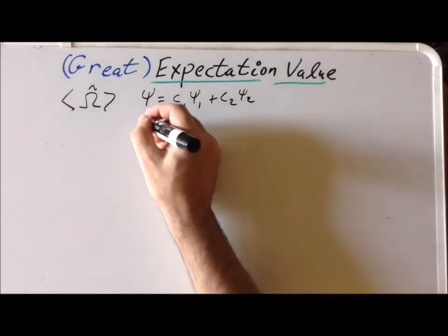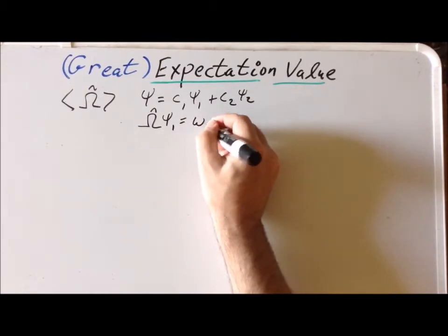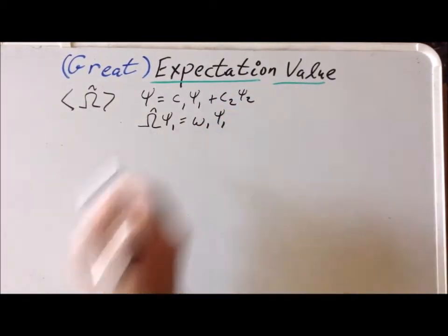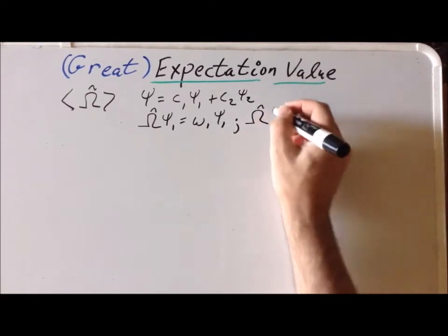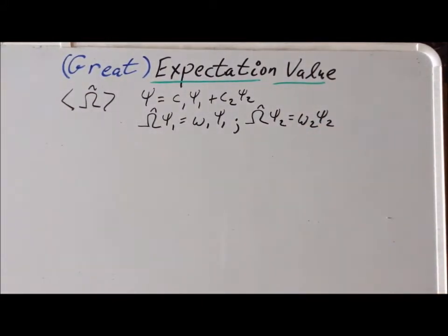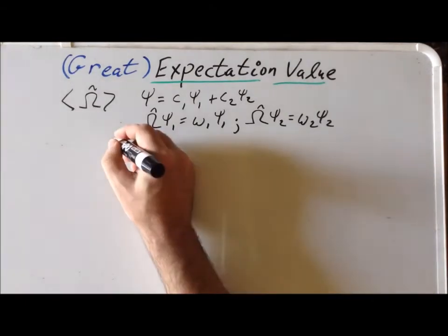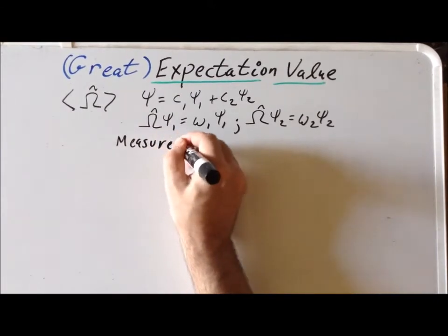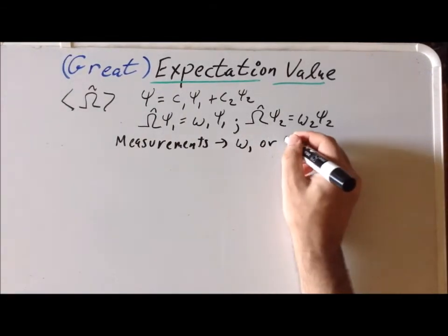We can show that the operator acts on psi1 to give omega1 times psi1, so omega1 is the eigenvalue that goes with eigenfunction psi1. And if the operator acts upon psi2, we get back omega2 times psi2, showing that psi2 is an eigenfunction of the operator with eigenvalue omega2. An important thing to keep in mind is that if we take a single measurement, the only possible results would be omega1 or omega2.